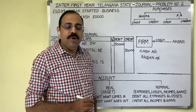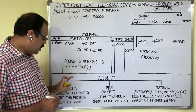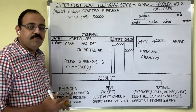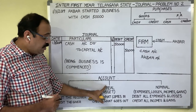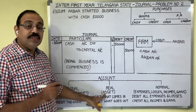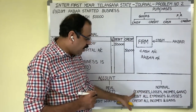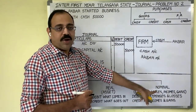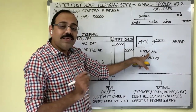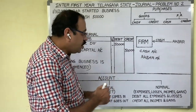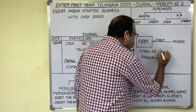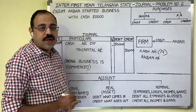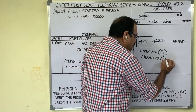Second step is grouping. Accounts are divided into three types: personal account, real account, and nominal account. If any account is opened with a personal name or firm name, it is a personal account. If any account is opened with an asset name, it is a real account. If any account is opened with an expenditure name, loss name, income name, or gain name, that is a nominal account. Cash is an asset, so cash account is a real account. Akbar's account is opened with a personal name, so it is a personal account. Second step is completed.